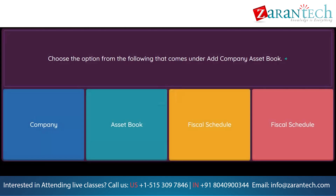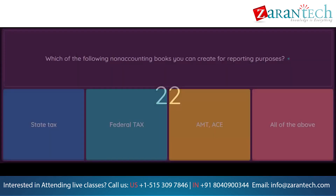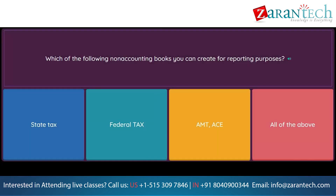Question: Choose the option from the following that comes under add company asset book. Option 1: company. Option 2: asset book. Option 3: fiscal schedule. Option 4: fiscal schedule. Question: Which of the following non-accounting books can you create for reporting purposes? Option 1: state tax. Option 2: federal tax. Option 3: AMT, ACE. Option 4: all of the above.